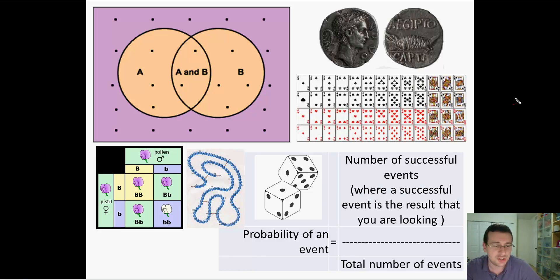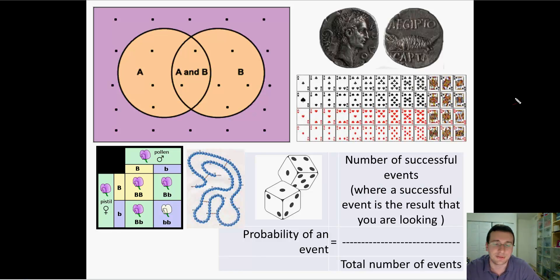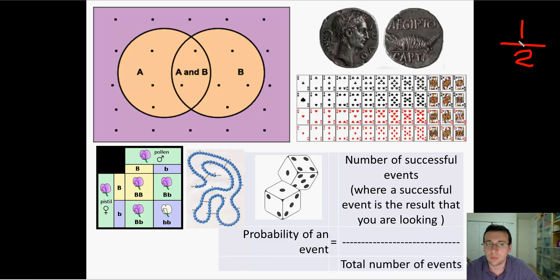Probability is the chance of something happening. We already talked about this briefly in a previous video. For example, the chances of getting either heads or tails is one-half when you flip a coin, because there are two possibilities and the expected outcome is one. So there's a one-half chance of getting either heads or tails.